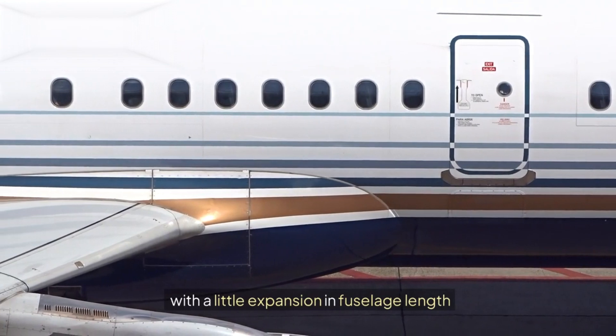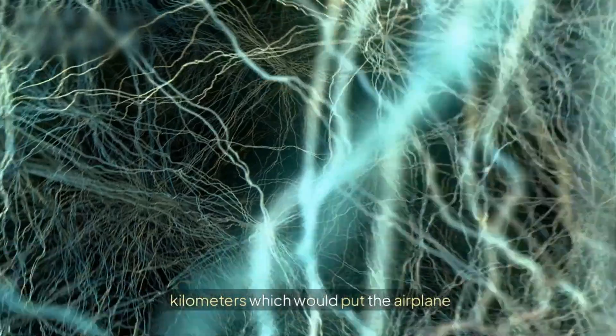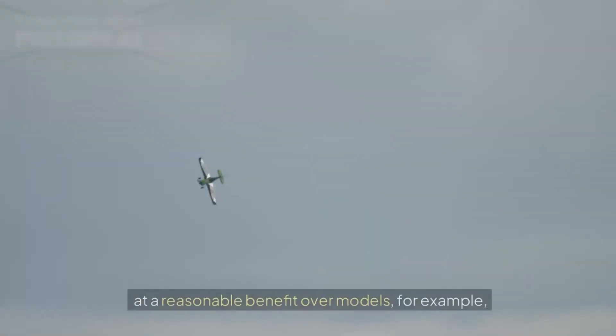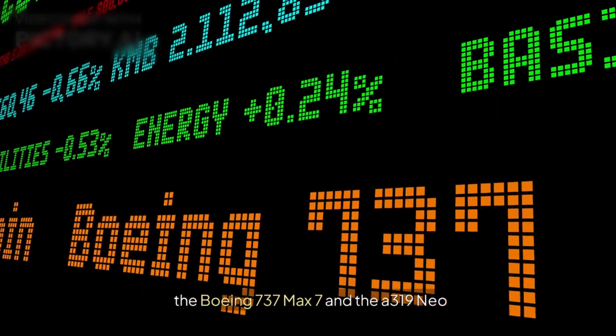For such a model, the A220-500 is expected to haul around 170 travelers with a little expansion in fuselage length. Its range could be no less than 6,000 kilometers, which would put the airplane at a reasonable benefit over models, for example, the Boeing 737 MAX 7 and the A319neo.